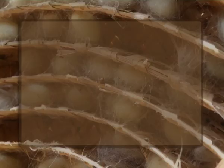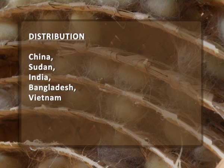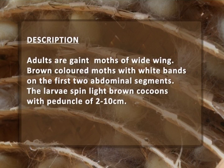Fagara silk: thirteen species of Attacus are known to produce this silk. Among them, the giant silk moth Attacus atlas is commercially important. The species producing Fagara silk are Attacus atlas and Attacus edwardii, distributed in China, Sudan, India, Bangladesh, and Vietnam. The food range includes Ailanthus and Prunus species. Adults are giant moths with wide brown-coloured wings with wide bands on the first two abdominal segments. The larvae spin light brown cocoons with a peduncle of 2 to 10 centimeters.